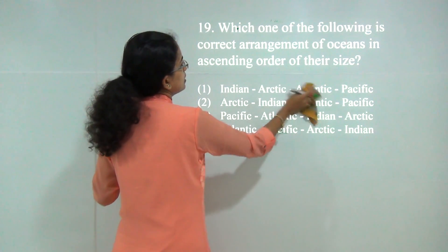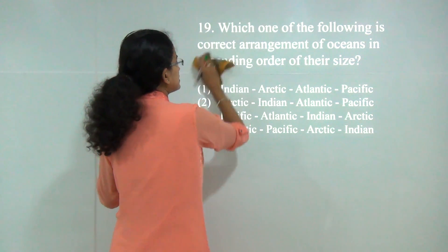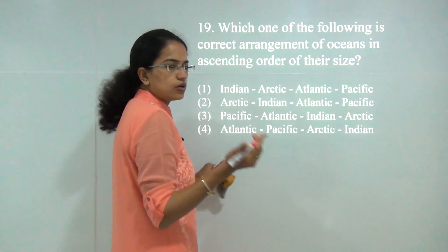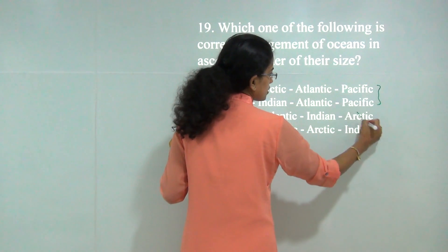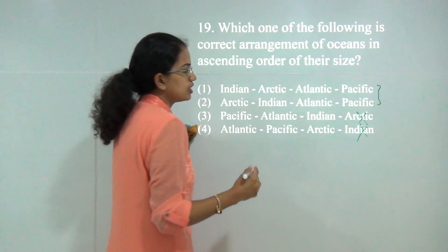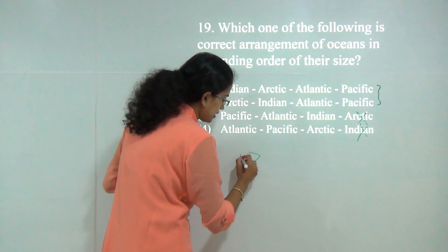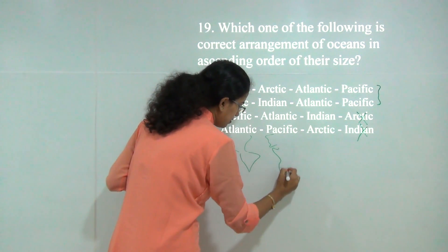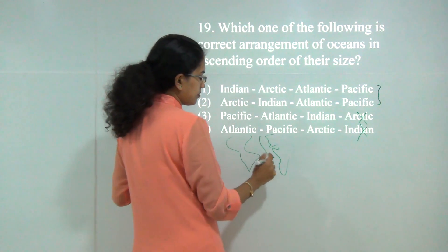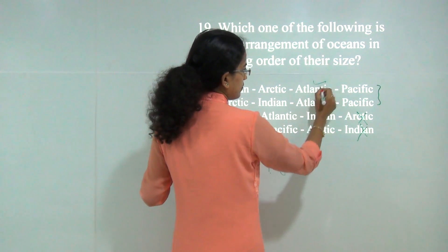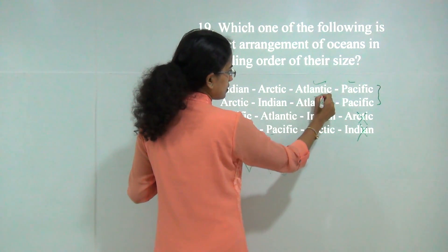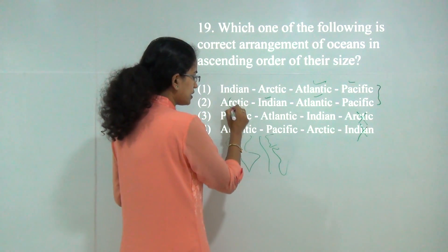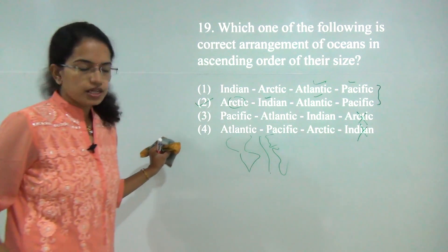Next question: arrange the oceans in ascending order of size. Ascending means increasing order, from smaller to bigger. The Pacific Ocean is the biggest, so it would be last. Next to the Pacific is the Atlantic Ocean, which lies between the Americas and Europe and Africa. Then you have the Indian Ocean, and finally the Arctic Ocean, which is the smallest. So the correct choice would be 2.